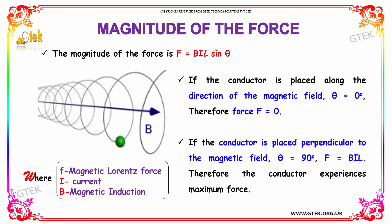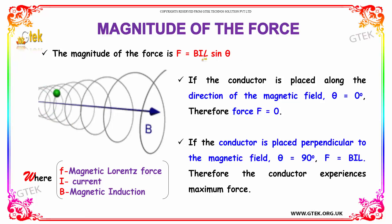Whereas if the conductor is perpendicular to the magnetic field, θ becomes 90 degrees, so sinθ = sin90° = 1, and F = B·I·L. Therefore, the conductor will experience a maximum force.